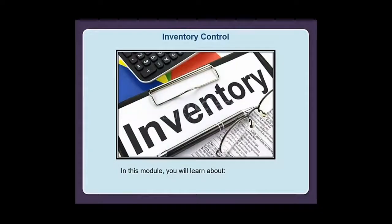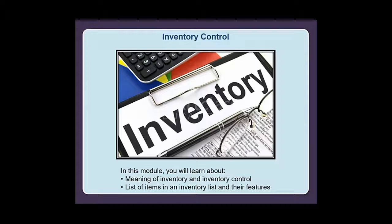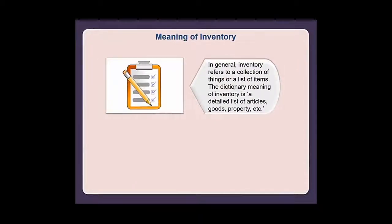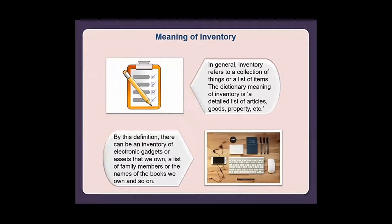In this module you will learn about the meaning of inventory and inventory control, the list of items in an inventory and their features. In general, inventory refers to a collection of things or a list of items. The dictionary meaning of inventory is a detailed list of articles, goods, property, etc. By this definition there can be an inventory of electronic gadgets or assets that we own, a list of family members, or the names of books we own.